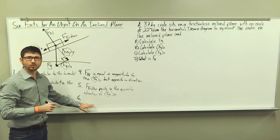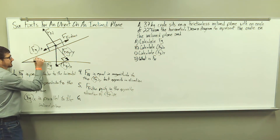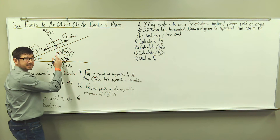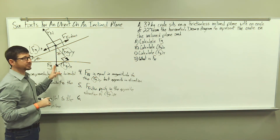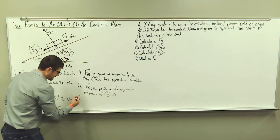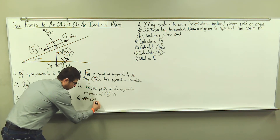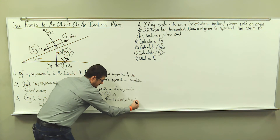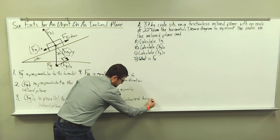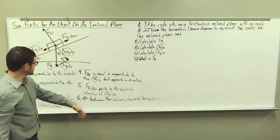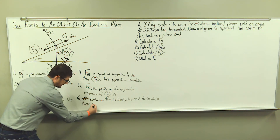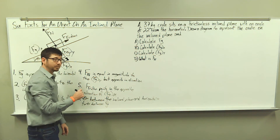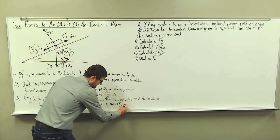The last fact for an object on an inclined plane is that the angle theta between the inclined plane and the horizontal is equal to the angle theta between the weight force due to gravity and the Y component of weight force. So theta between the inclined plane and the horizontal equals angle theta between the weight force due to gravity, identified by F sub G, and the Y component of weight force, identified by F sub G sub Y.